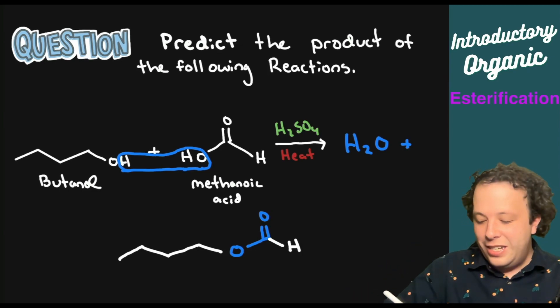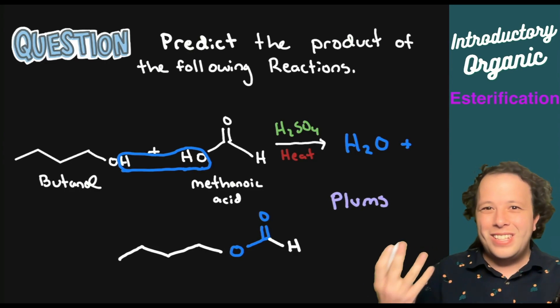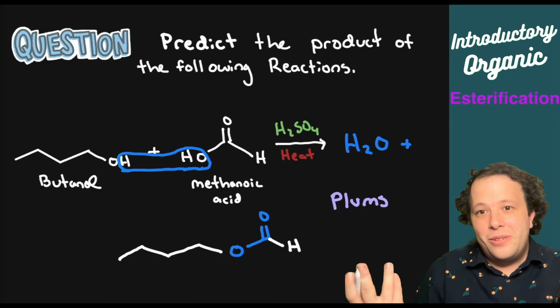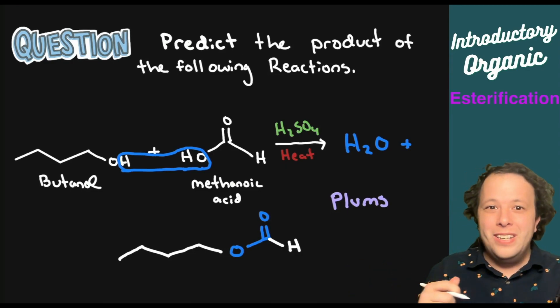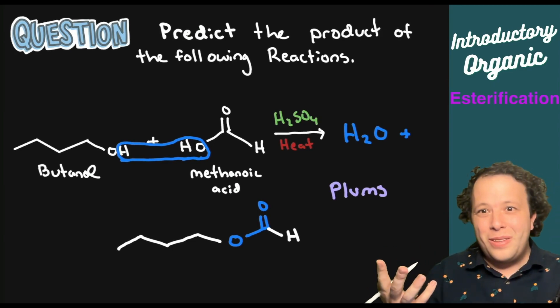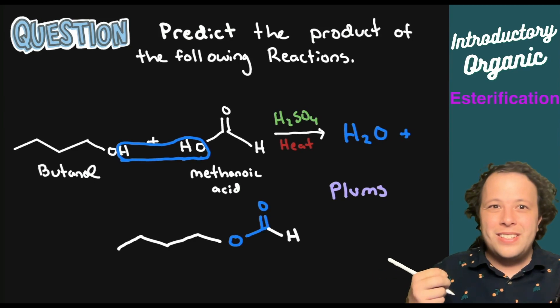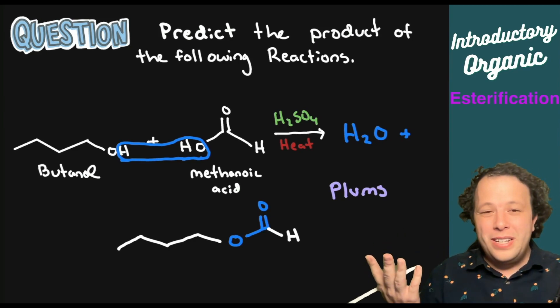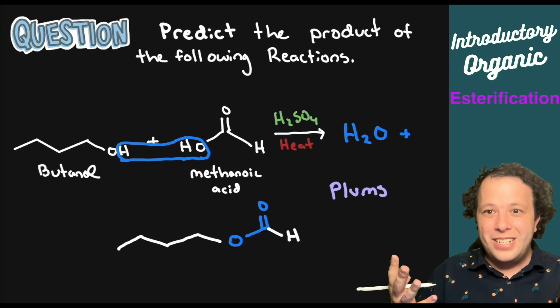And what is going to be remaining is the O from that alcohol connecting to the C double bond O and then our hydrogen that is coming off from the other structure. So I just highlighted the ester so that way you can see it and experience all those different colors. So with this one, it's actually a very unique ester. This one smells like plums. So like I mentioned, a lot of them have these really cool smells and aromas to them.